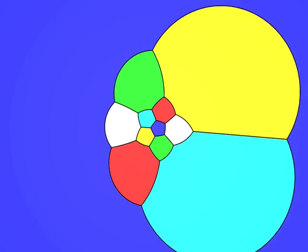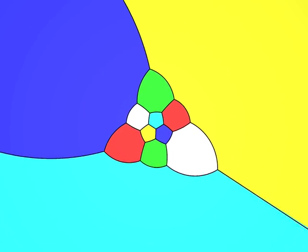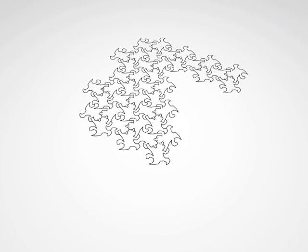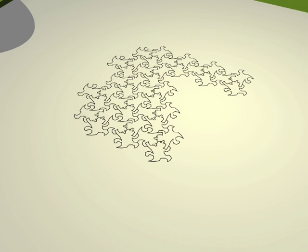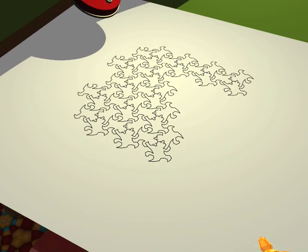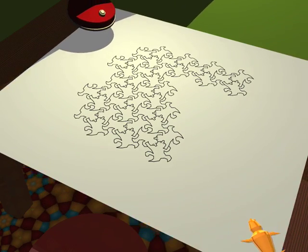These five solids have always fascinated geometers. The Greek philosophers attributed a magical importance to them by associating to each of them one of the fundamental elements from which the world is formed. We call these figures the Platonic solids.